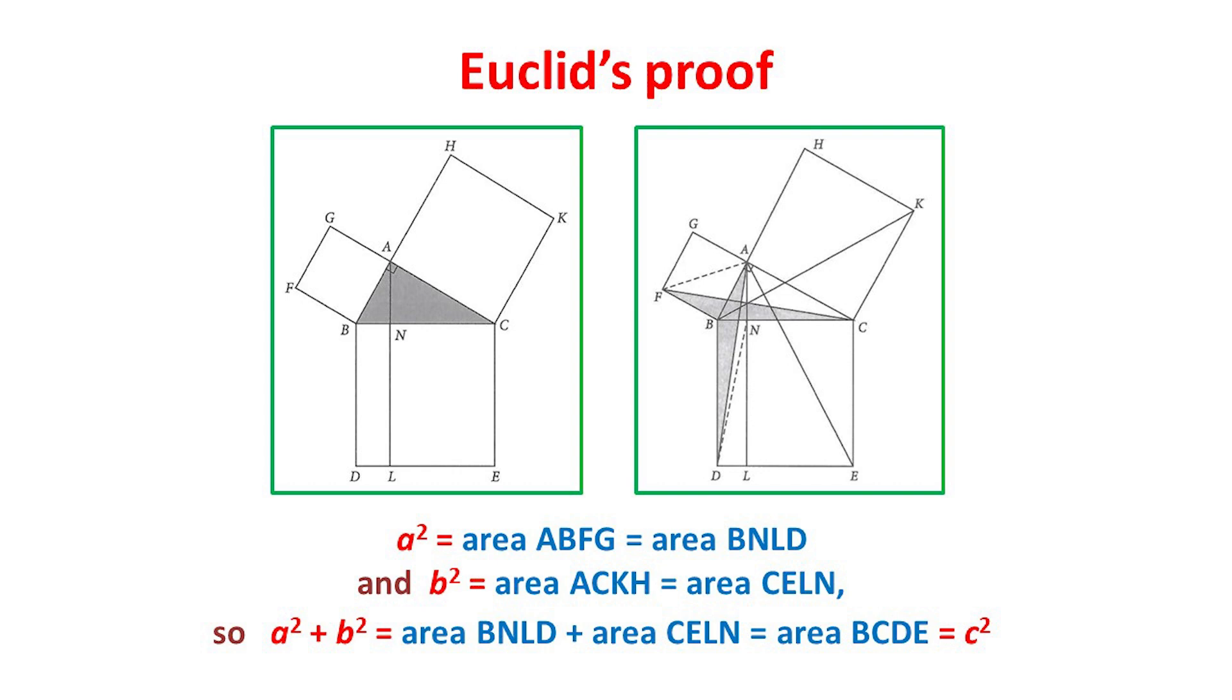Using congruent triangles, as we've indicated on the right, Euclid proved that in the lower square, the left-hand rectangle has the same area as the upper left-hand square.